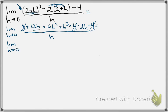I have a 12h here and a minus 2h, so that's going to be 10h plus 6h squared plus h cubed all over h.